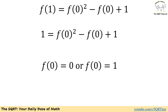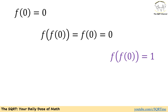Of course we need to verify which case holds. Let's start with f of 0 equals 0. If we apply another f, then f of f of 0 is going to be f of 0, and we already know f of 0 is 0. However, we also know that f of f of 0 is 1. This is a contradiction, so this case is not acceptable.